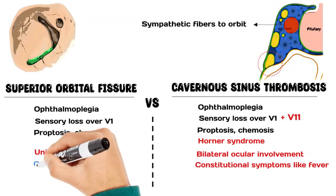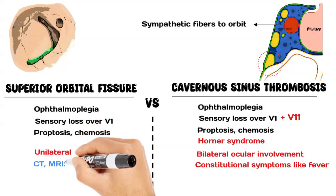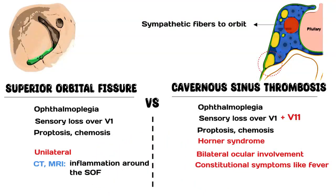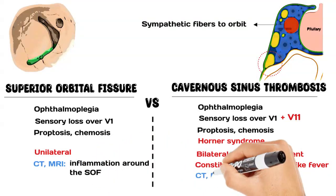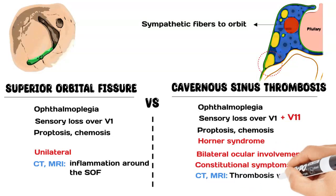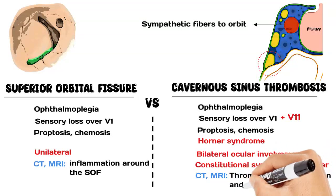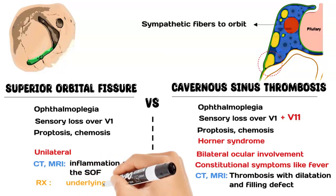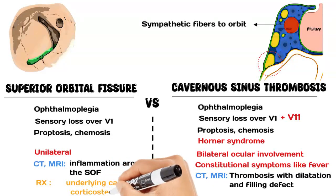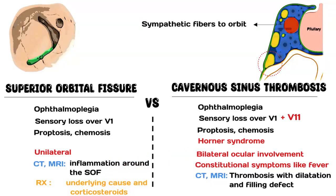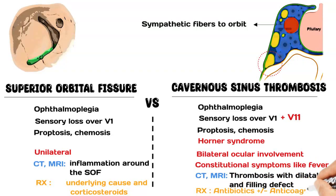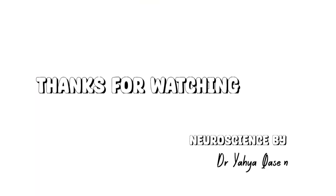Regarding investigations, CT scan and MRI in superior orbital fissure syndrome will show inflammation around the fissure, while in cavernous sinus thrombosis there will be thrombosis with dilatation and filling defect at the cavernous sinus. Treatment of superior orbital fissure involves treating the underlying etiology, and corticosteroids can help. In cavernous sinus thrombosis, antibiotics with or without anticoagulation is the treatment of choice.